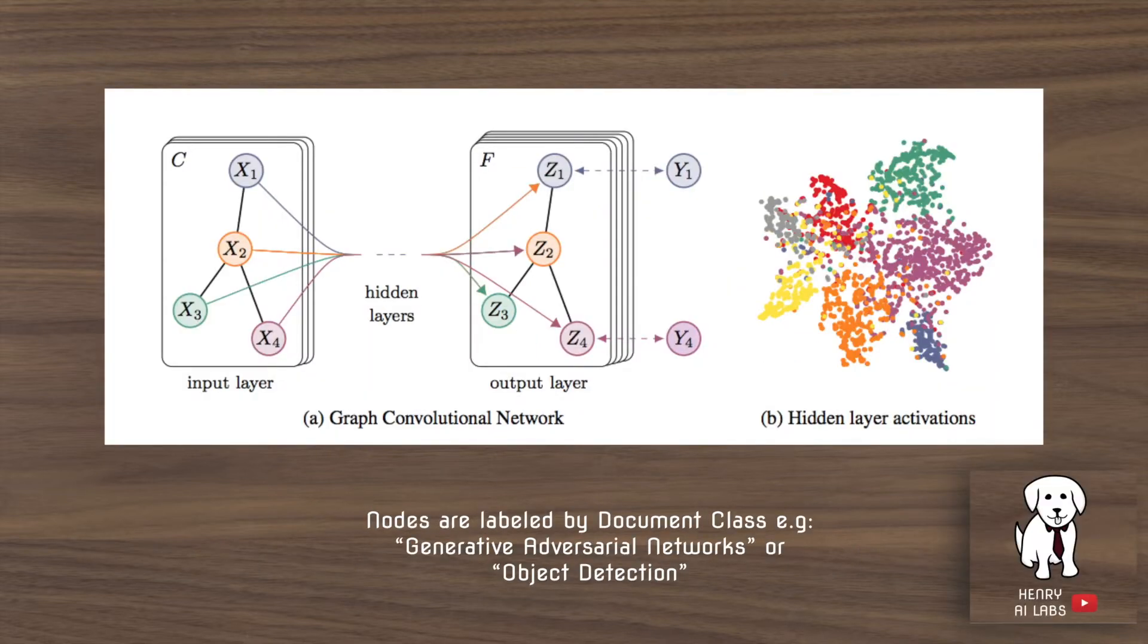So this label again illustrates the concept. You take in the graph data and then you sequentially form representations of each node in the graph, these z1, z2, z3, z4, along each of the hidden layers until you flatten it out into y1 through y4, which are the labels for each node. And nodes in the citation network example are labeled by the document topic. So x1 might be a paper written on generative adversarial networks. x2 could be a paper on object detection. x3 could be a paper on deep learning on graphs. And the edges represent citations.